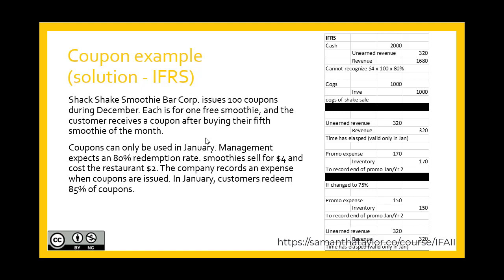There are two streams of revenue: one from regular smoothies and one related to the coupon smoothies. The $320 can't be earned until those coupons are actually redeemed or expire. In December we also reflect cost of goods sold for the 500 smoothies sold: 100 times 5 times $2 cost each. Then in January, when the coupons expire or are redeemed, we recognize that $320 as revenue in the period in which it was earned.